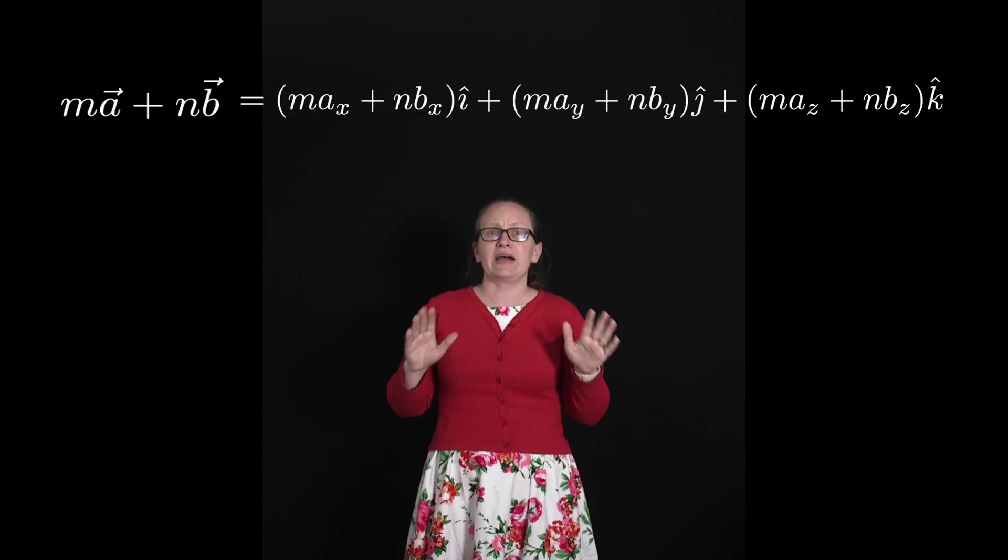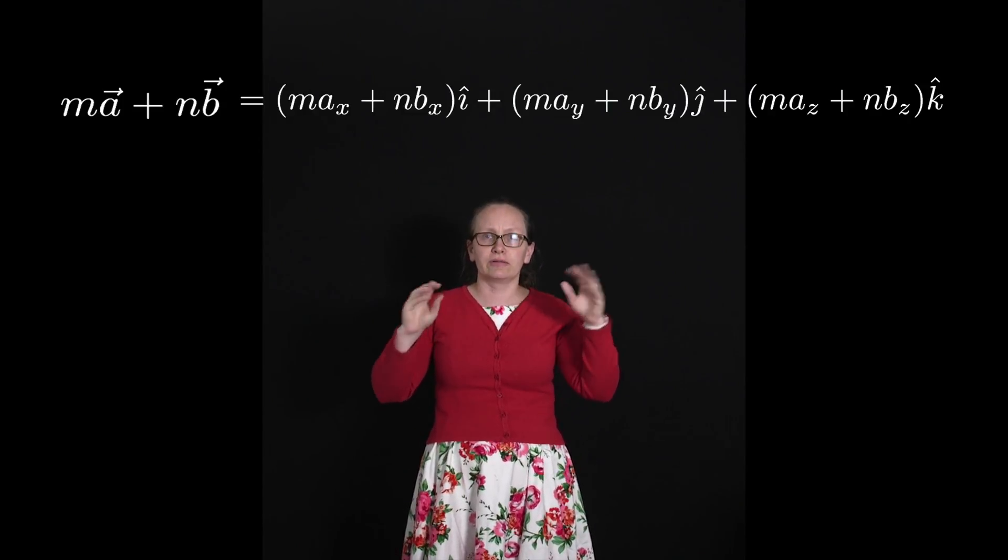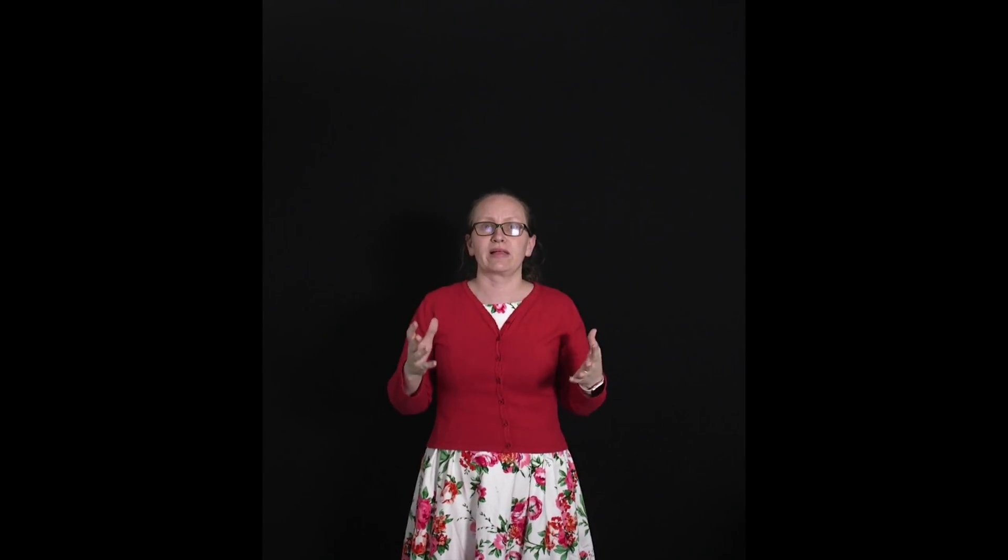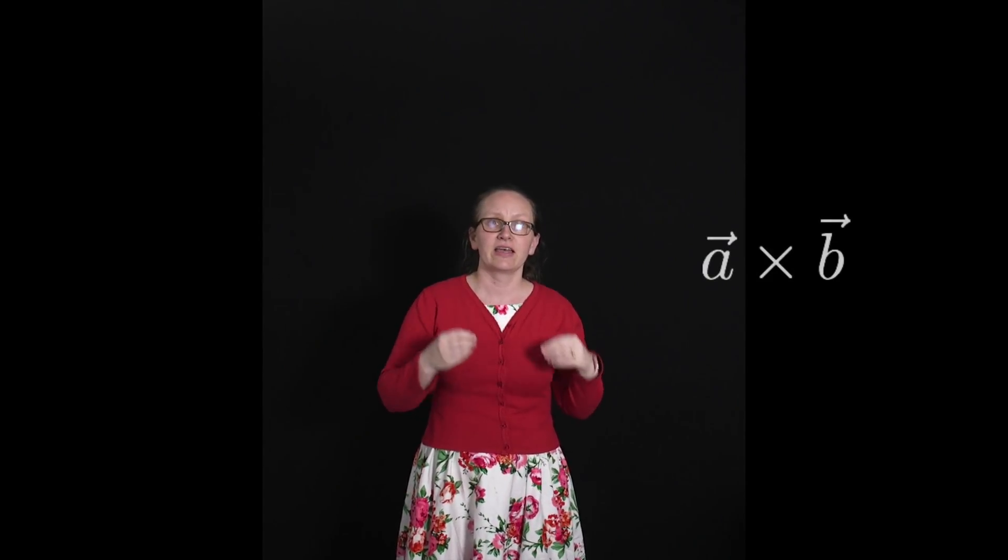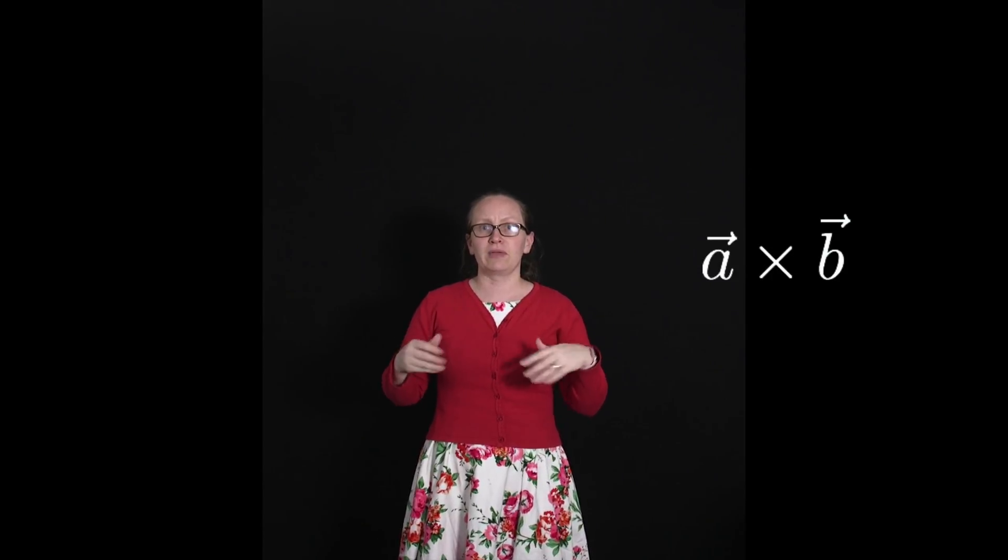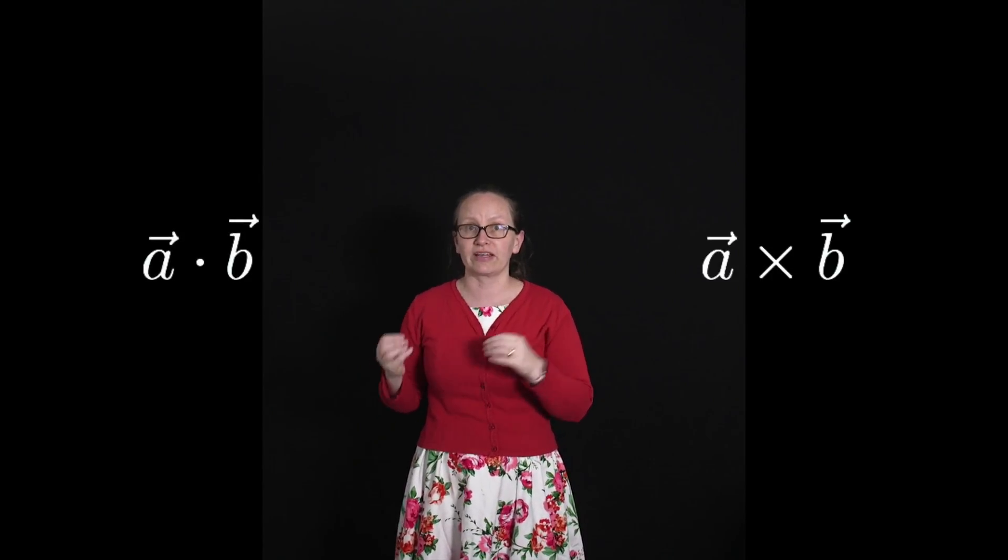What is a little bit harder with your unit vectors is multiplying them. There's a couple of different ways that we can multiply together vectors in unit vector notation. One way will give us a result which is a vector, so this is known as taking the cross product. The other result will be a scalar, which is known as taking a dot product.